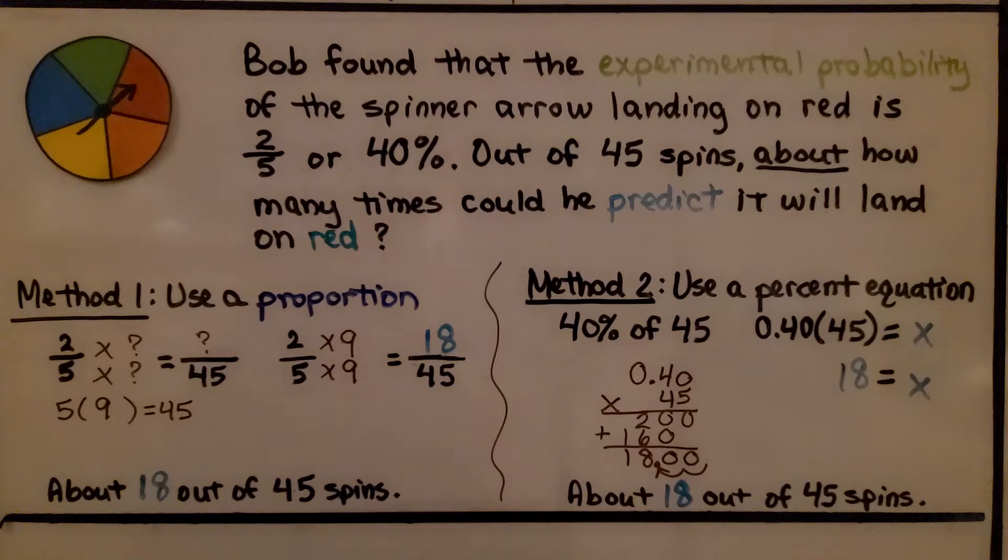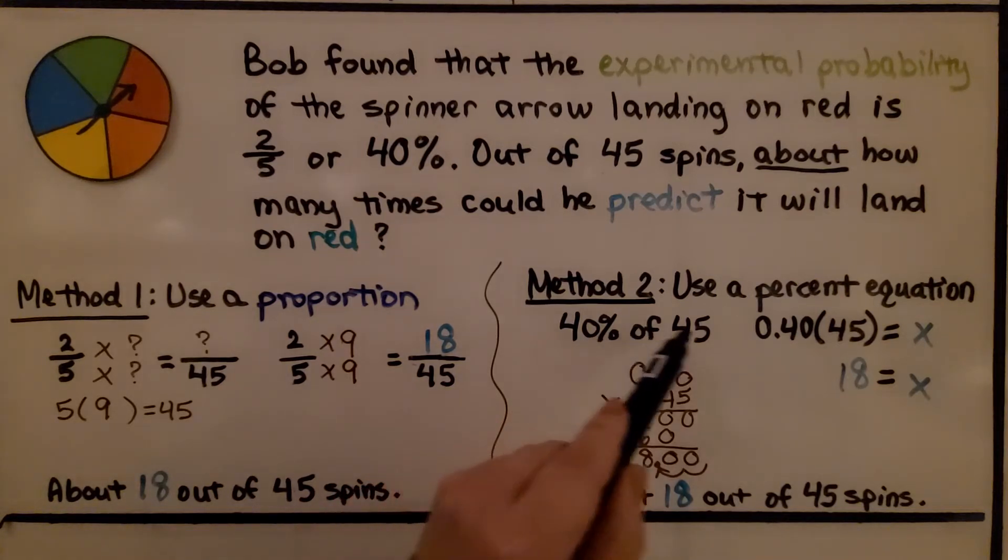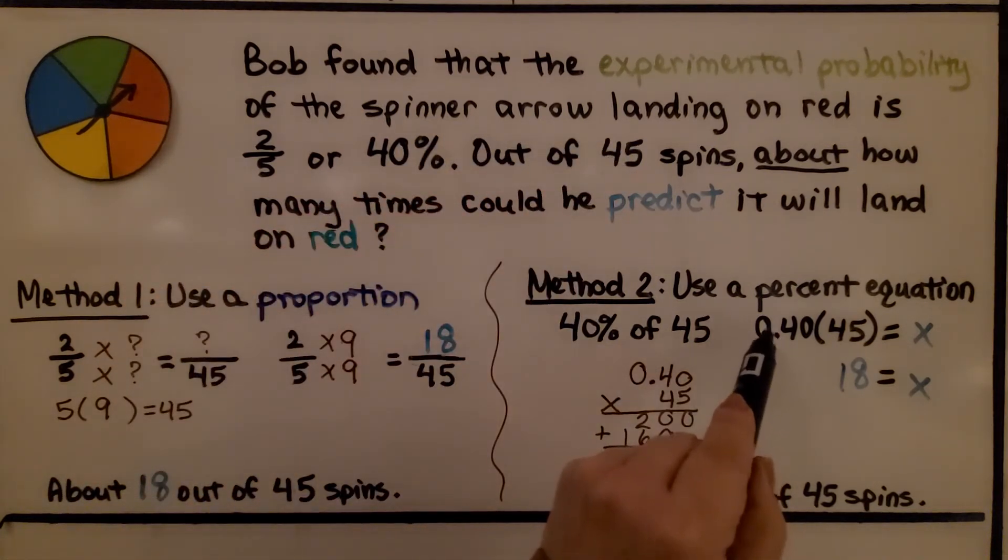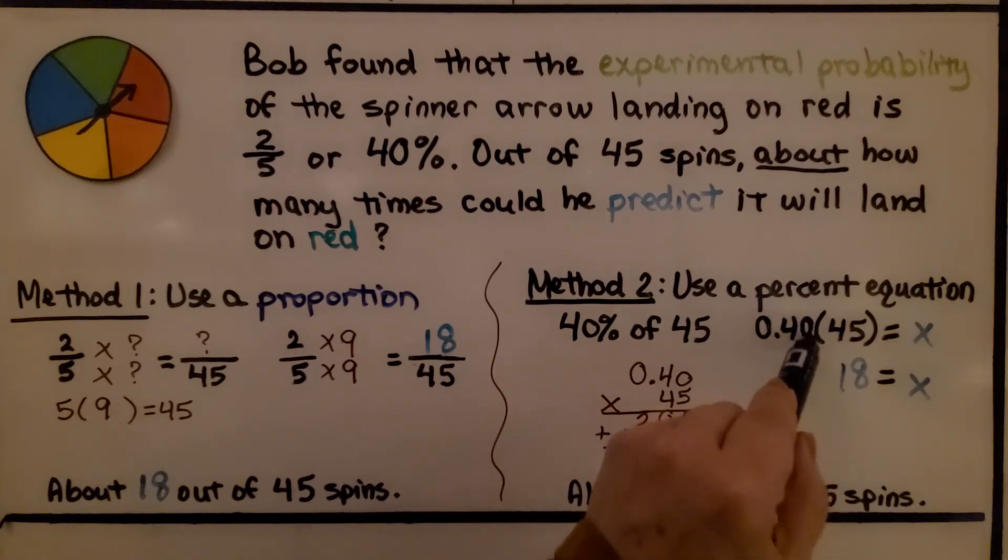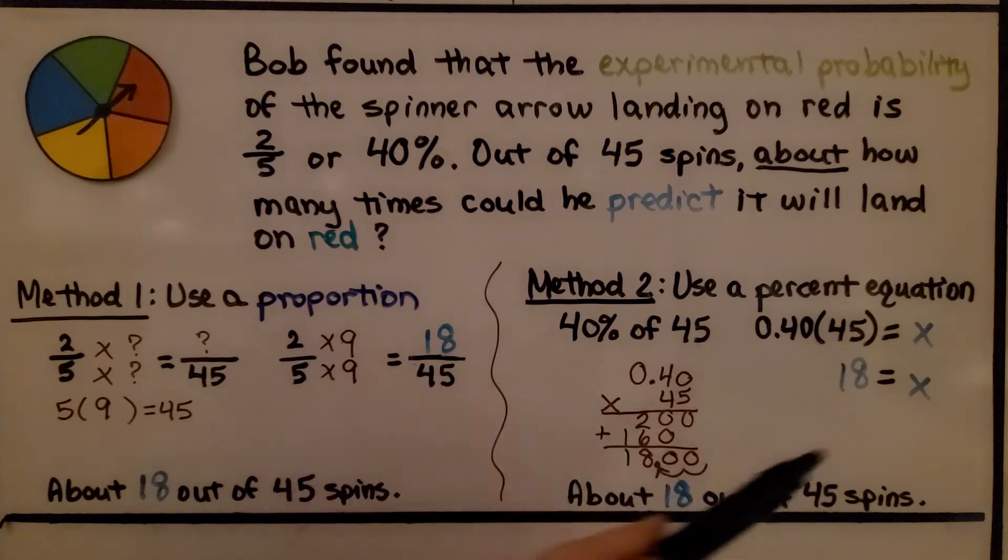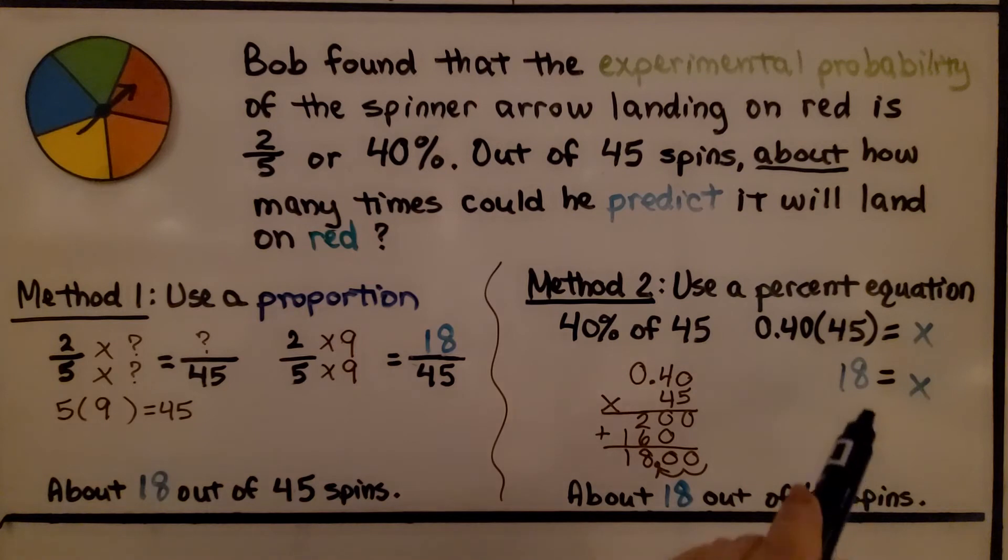Method 2, using the percent equation. We have 40% of 45. We're going to multiply as a decimal 0.40. We could even do 0.4, because this trailing 0 to the right of the tenths place isn't really necessary. We multiply it by 45 to solve for x algebraically, and we get 18. We have 2 decimal hops in the equation, so there's 2 decimal hops in the product. We have 18 is equal to x. So again, we know about 18 out of 45 spins it will land on red as our experimental probability.